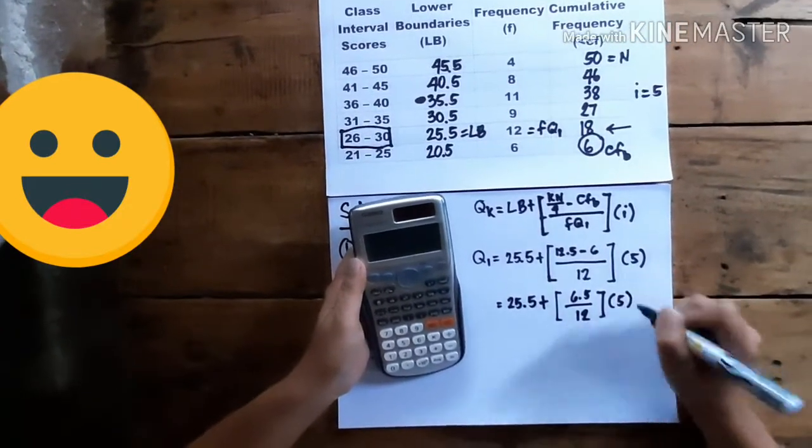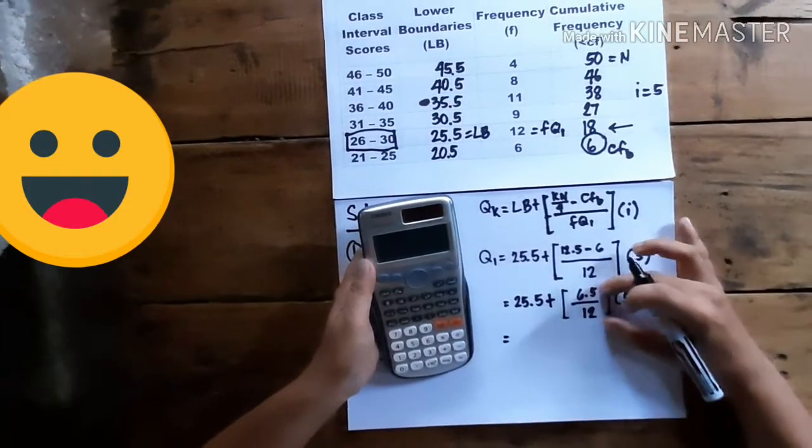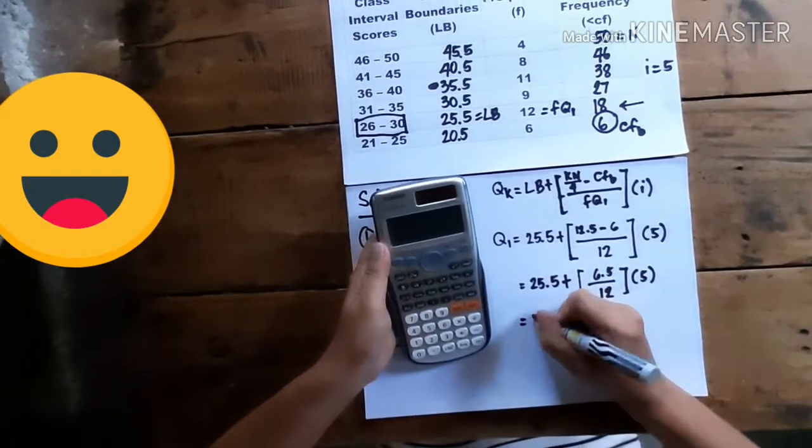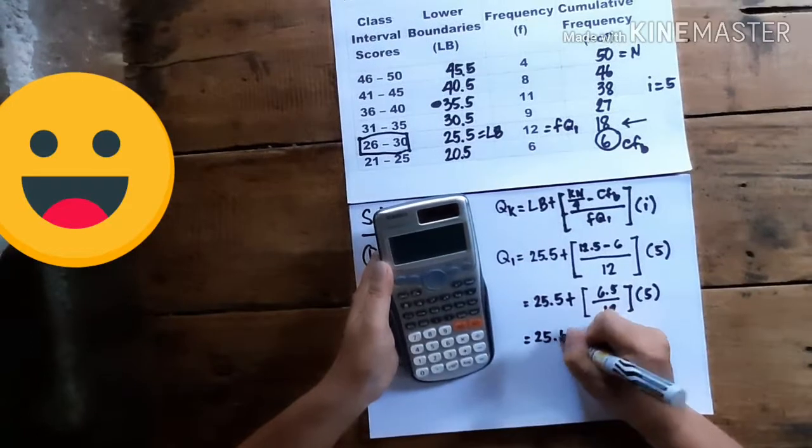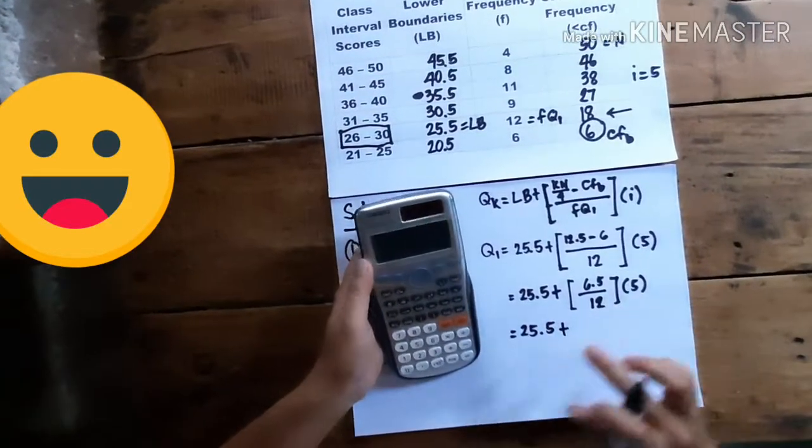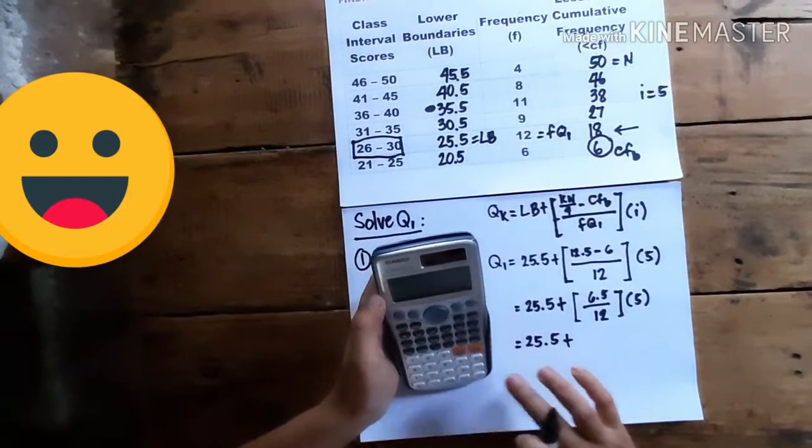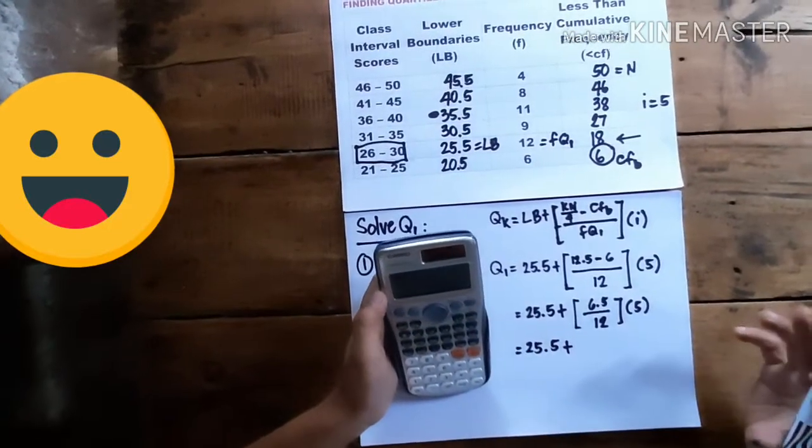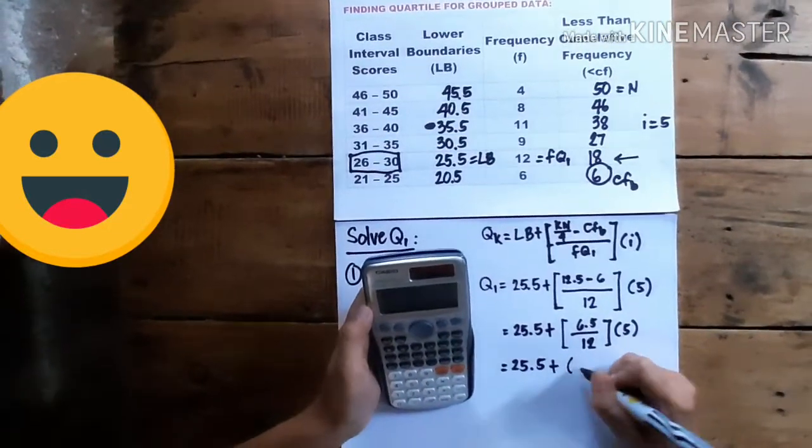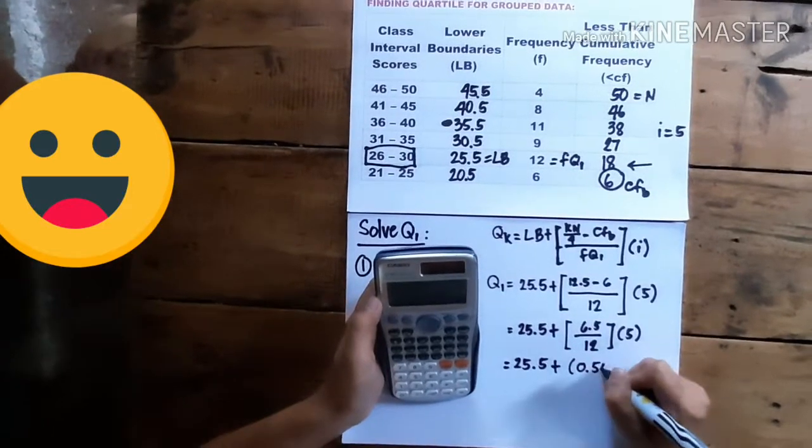And times 5. And next we divide. So this would be 25.5 plus, 6.5 divided by 12. This is, if we round off to 2 decimal places, this is equivalent to 0.54.